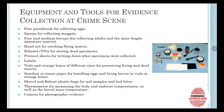First, a fine paintbrush is used for collecting the eggs. For collecting maggots, we use spoons. For collecting adult and more fragile immature insects, we use fine and medium forceps. For flying insects, hand nets will be used. For storing dead samples, we are going to use ethanol at 70% alcohol concentration.